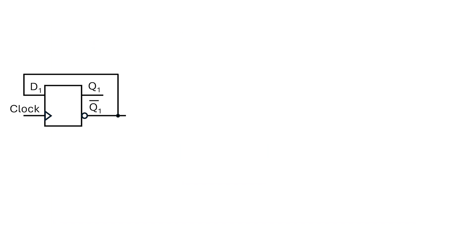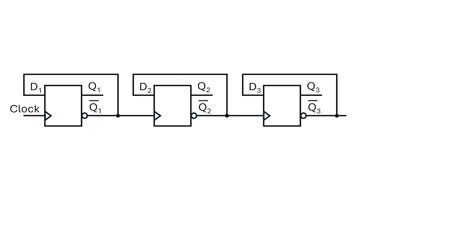Let's say I feed the Q-bar output back to its own input, but also to the clock input of the next D-type flip-flop. I'll call this signal Q-bar 1. The second flip-flop outputs Q-bar 2. This feeds into the clock of the third flip-flop. Its Q-bar output, Q-bar 3, feeds into the fourth flip-flop, which outputs Q-bar 4.